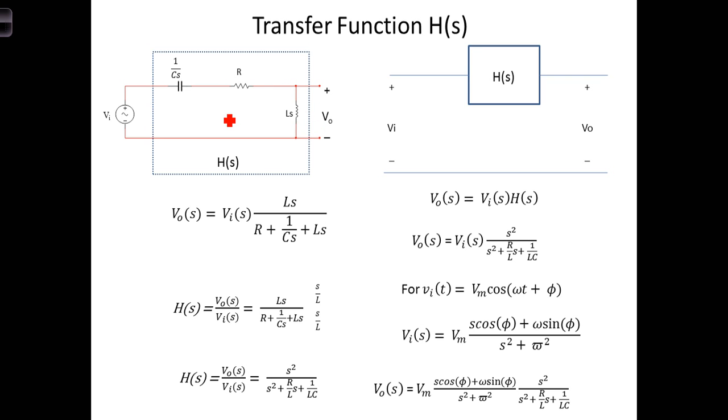You'll notice that it's all in the Laplace domain. Now let's write an expression for Vout in terms of Vin and the circuit parameters using a voltage divider. Vout of S, the Laplace transform of the output voltage, is equal to the Laplace transform of the input voltage times Ls divided by the sum of the three series devices.